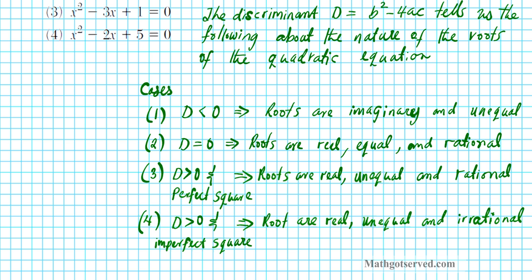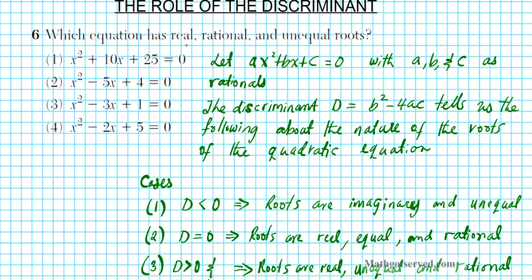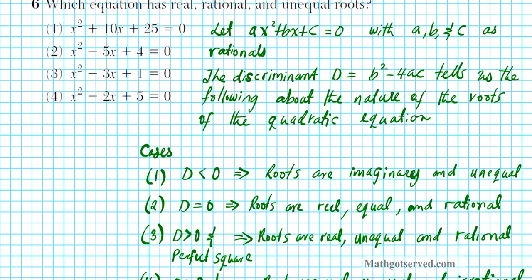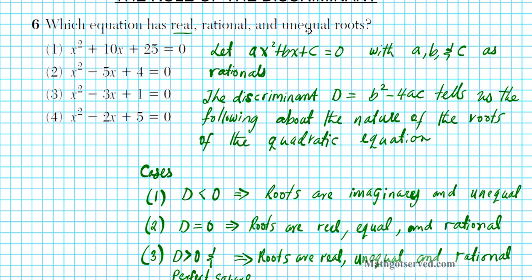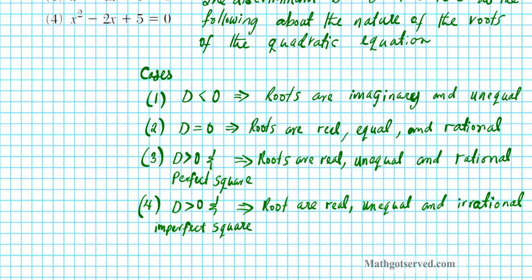Now let's go back to the problem. It says which equation has real, rational, and unequal roots. We're going to look at these four options, find the discriminant value of all four of them, and see which one gives real, rational, and unequal roots. Based on our cases, the discriminant that is greater than zero and a perfect square corresponds to case three — real, unequal, and rational. So we're looking for a positive discriminant that is also a perfect square.